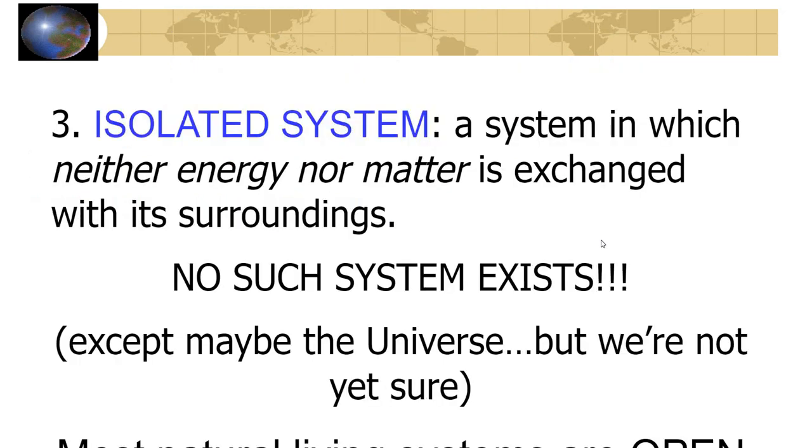The third type of system is kind of funny. It's an isolated system, and that is where there's nothing really being exchanged, neither energy nor matter. The only possible example of that really is the universe. We're never going to cover this in our class. For purposes of this class, we're only going to be dealing with open and closed systems.